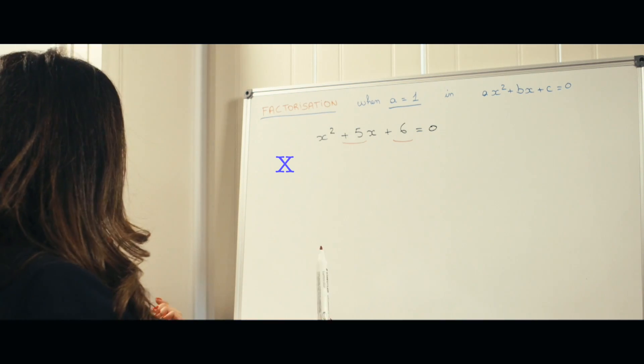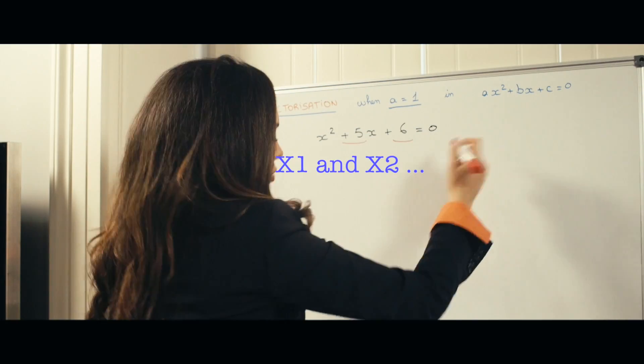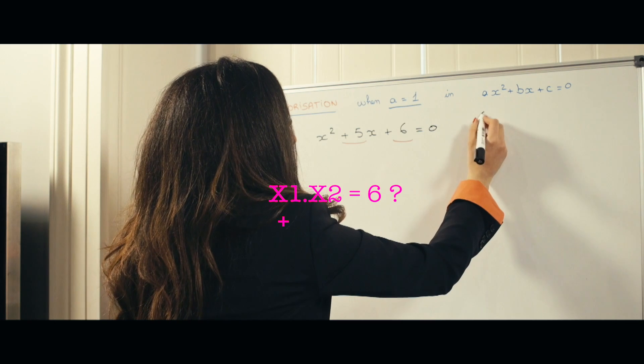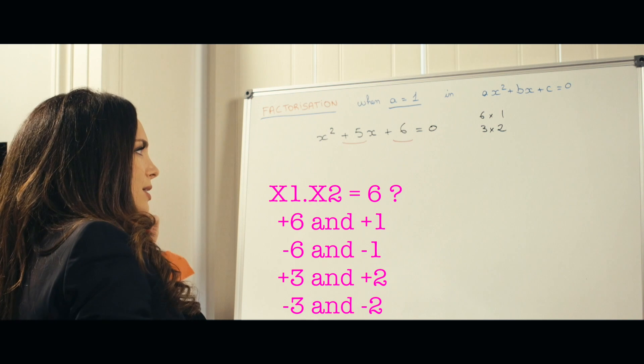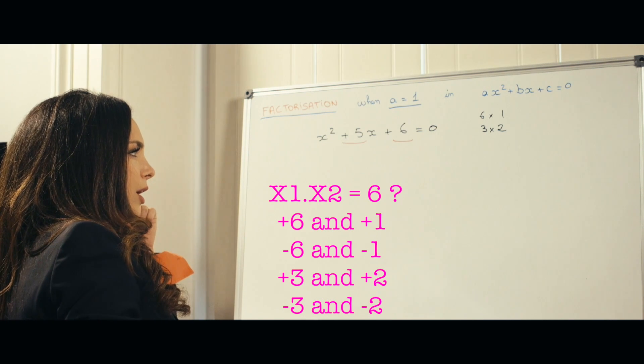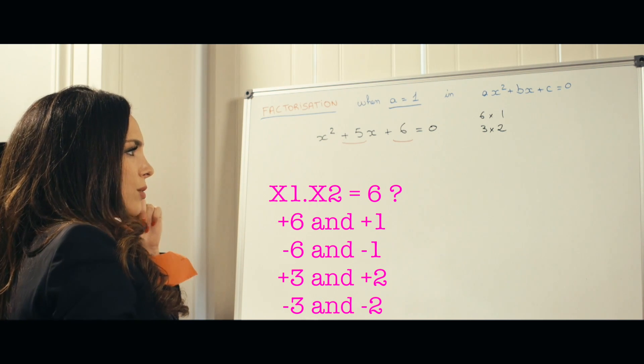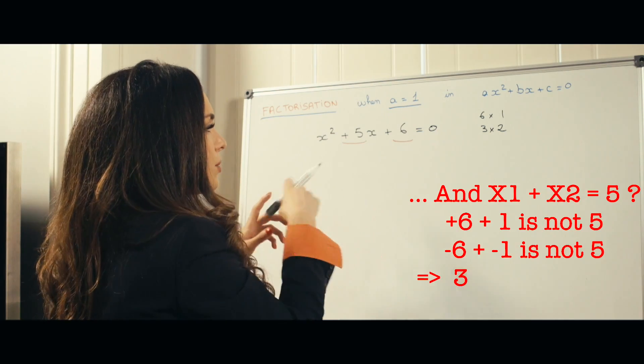So let's think, what two numbers could that be? For 6, usually you can have 6 times 1 or 3 times 2. So let's think, is there two numbers where the product is equal to 6 and the sum is equal to 5?